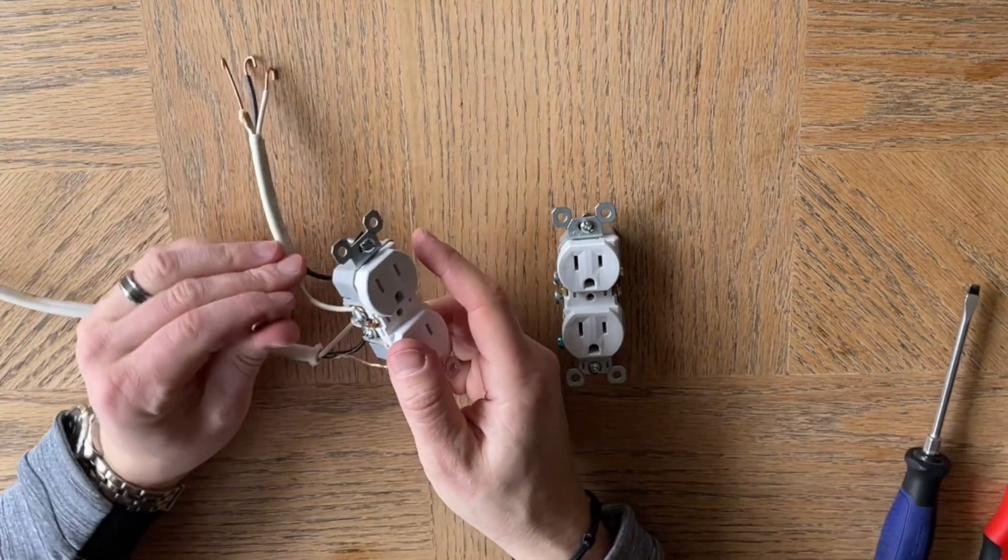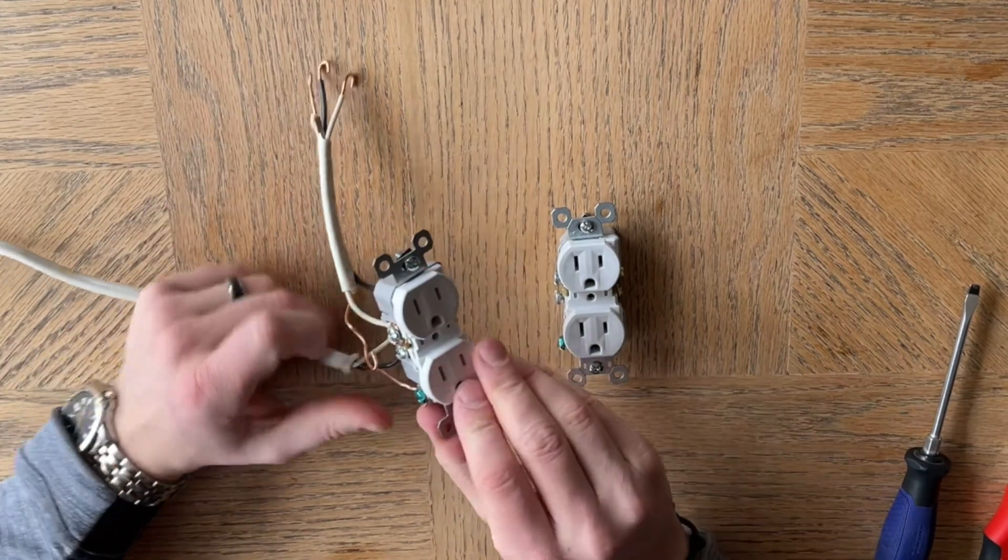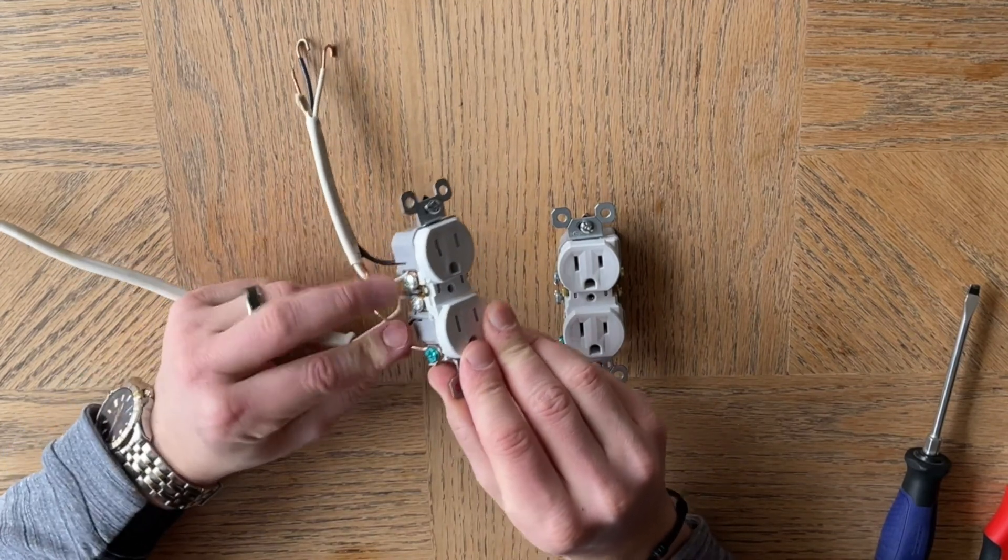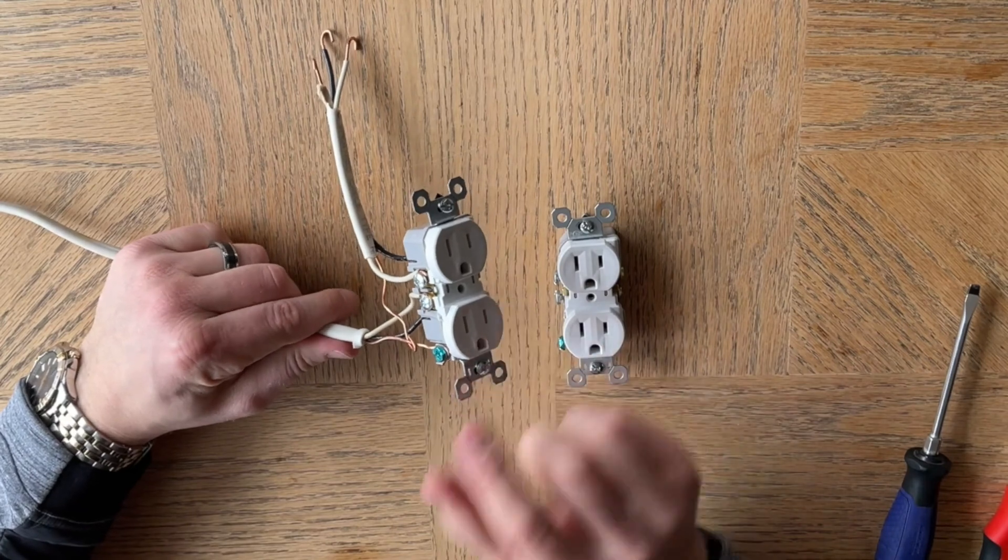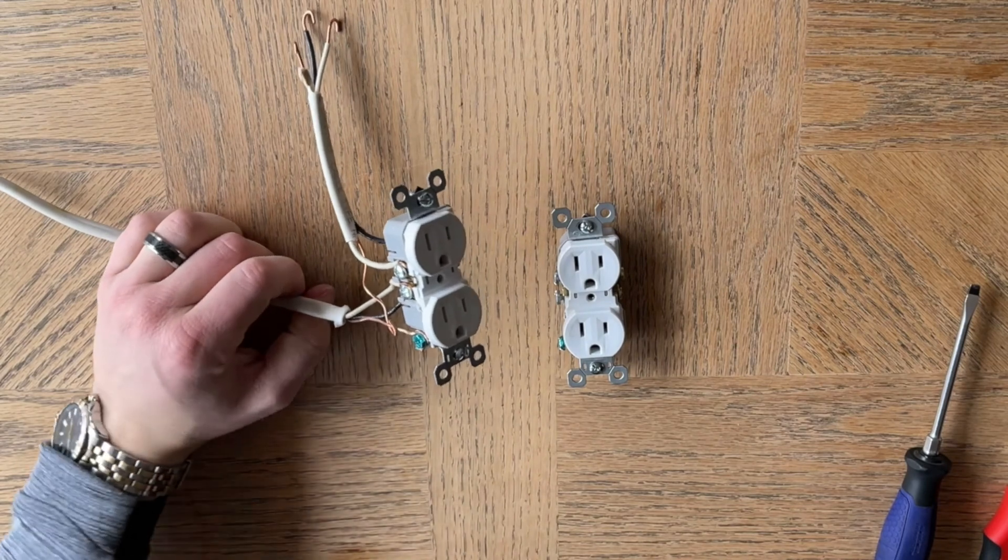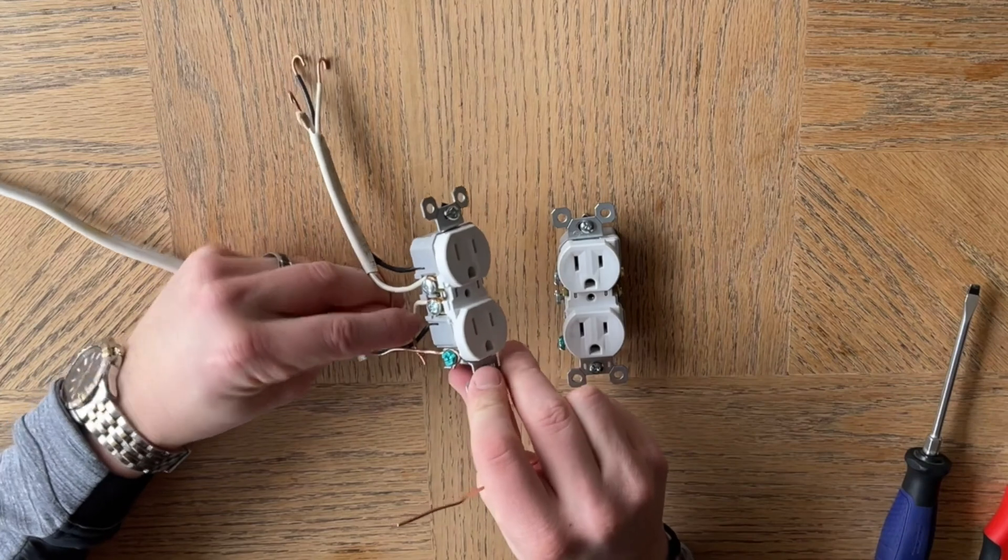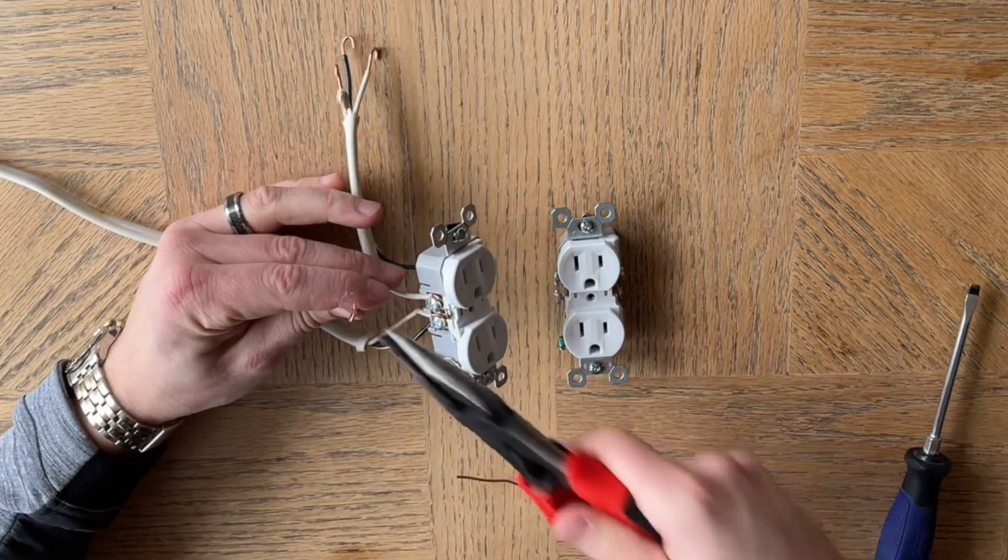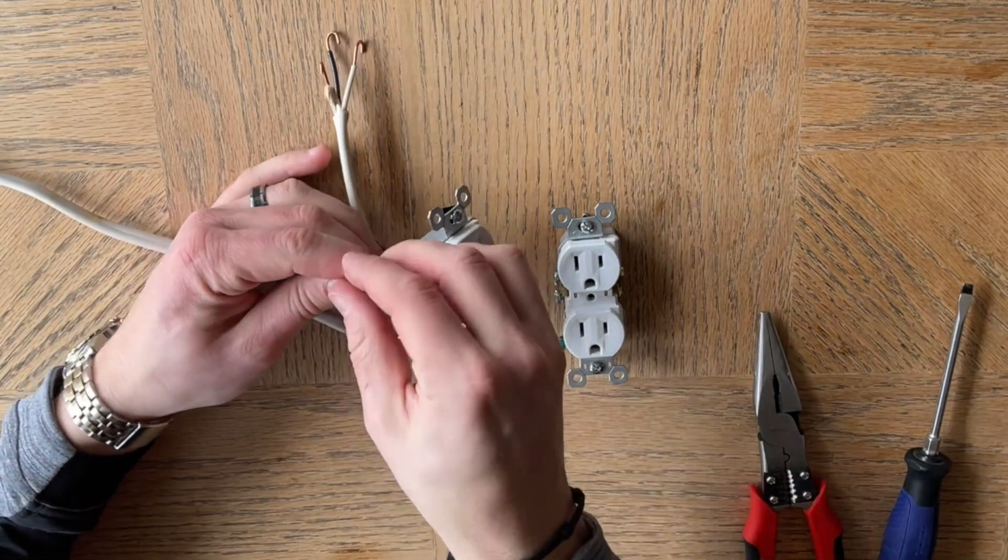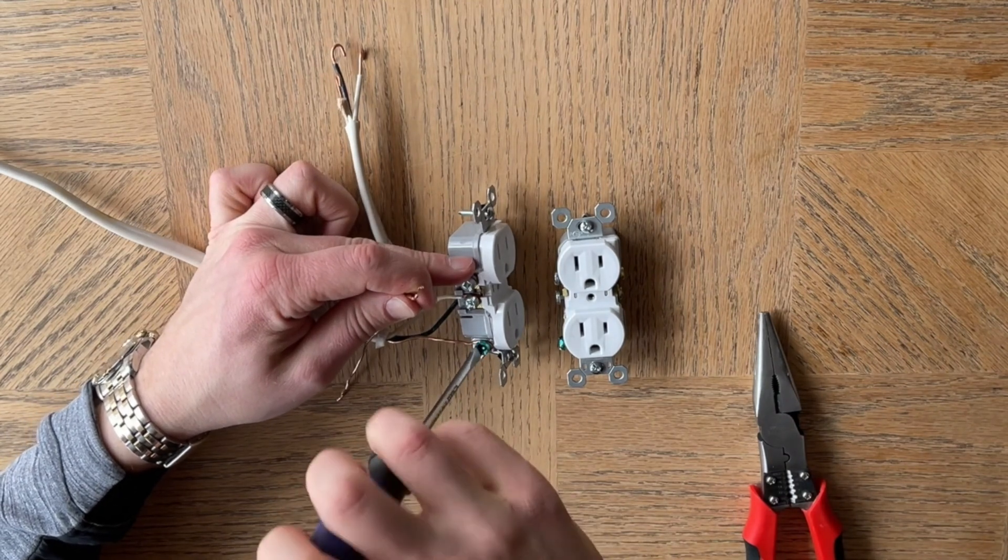Okay, and then this ground you will want on the ground here. Now in daisy chaining, a very common practice that you'll see all the time is someone simply hooks this ground like that and that's it. I personally don't like that. What I would do is I'd wire all three of these together with a wire nut and then I would pigtail off.